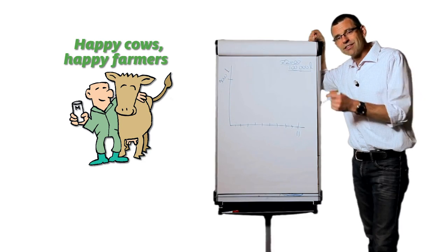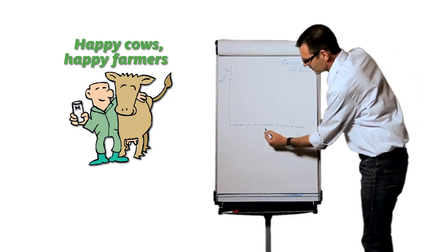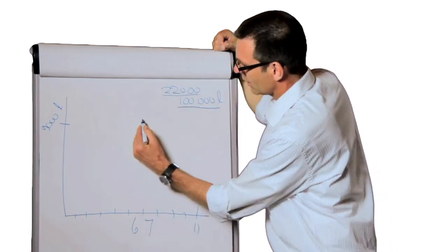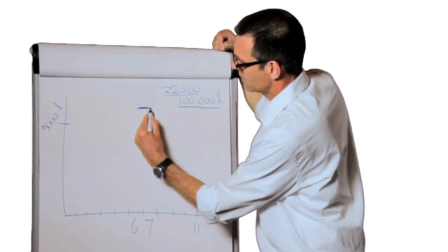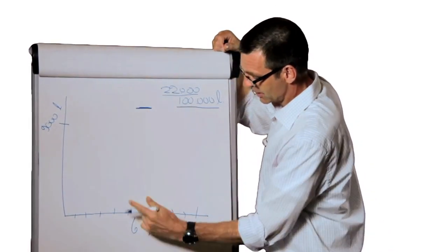Because it's the sixth and the seventh lactation. So 6 and 7 are the very highest. They are equally high, 6 and 7.